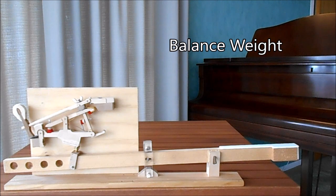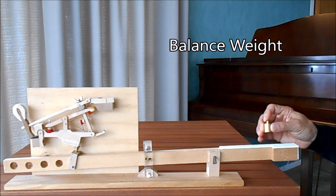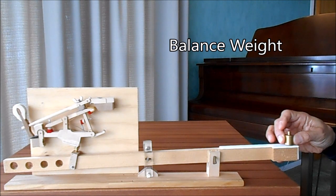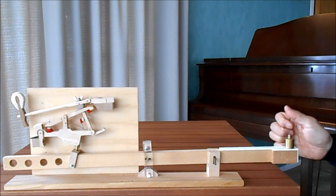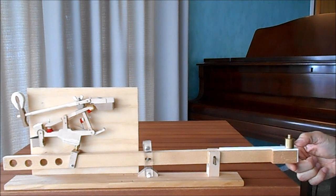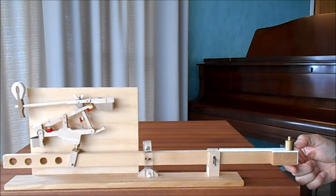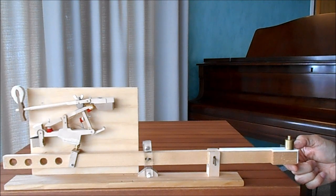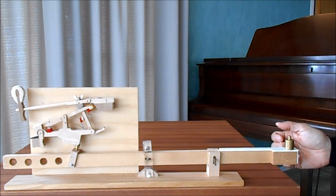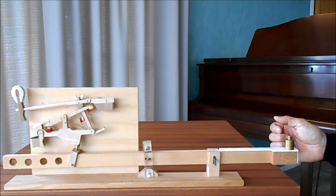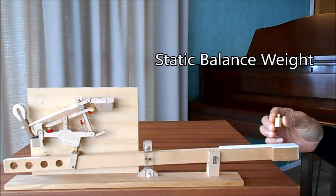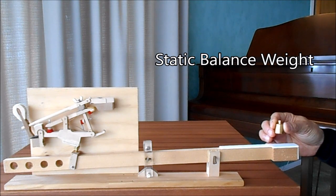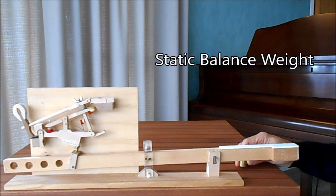One of them is balance weight. If I put this weight in front of the key like this, the action balances as a lever. Wherever I stop it, the action stops or stays there. This weight is the balance weight. This is static weight of this action.